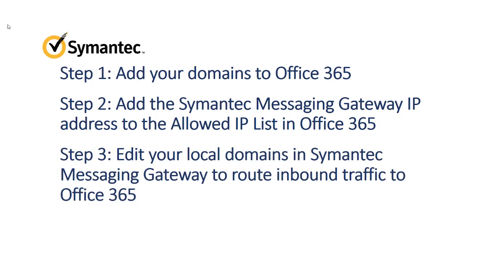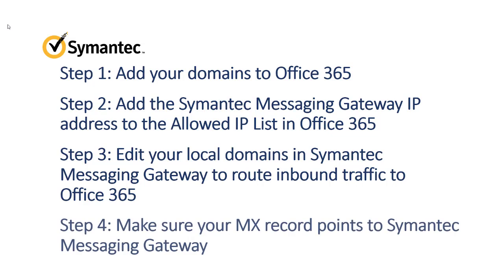Step 3: Edit each local domain in Semantic Messaging Gateway to add the Office 365 address. This allows Semantic Messaging Gateway to send the filtered mail to Office 365 instead of to your old mail server. Semantic recommends that you enable TLS encryption to secure the connection to the Office 365 cloud service. Step 4: Make sure your MX record points to Semantic Messaging Gateway. If you changed your MX record when you switched to Office 365, you'll need to change it back. If your MX record is still pointing to Semantic Messaging Gateway, you won't have to make any changes.